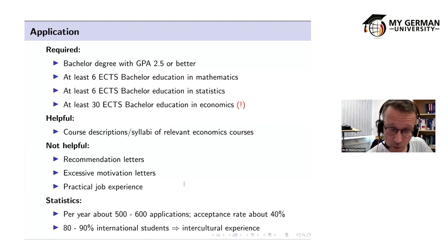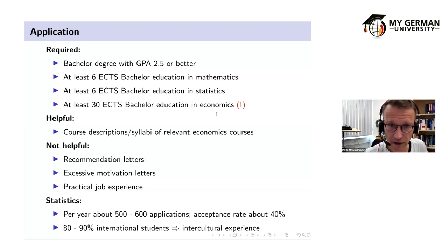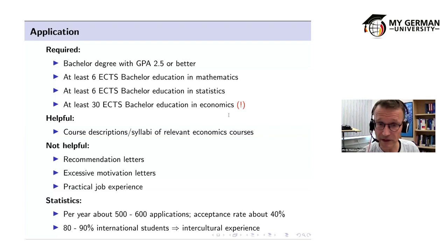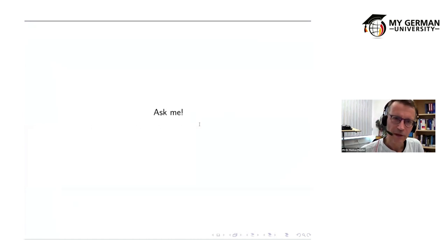Like Bayreuth, there is only a winter intake. We receive between 500 and 600 applications per year, with an acceptance rate of about 40%. The main reason for rejection is insufficient economics pre-education. Between 80 and 90% of students are international, coming particularly from Asia and increasingly from Africa, with fewer from the Americas. The intercultural experience is considered a major asset of the program.